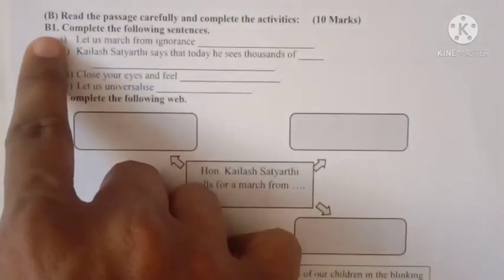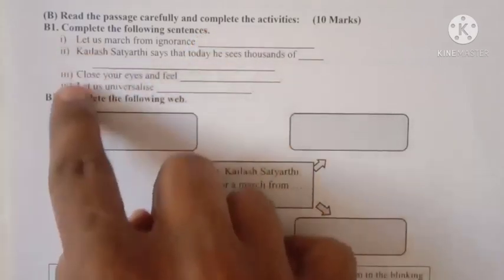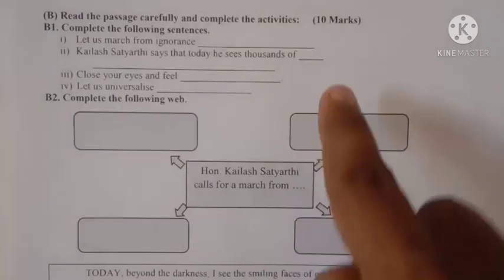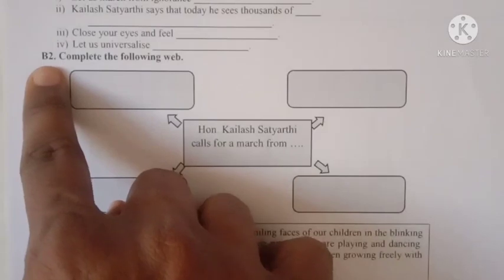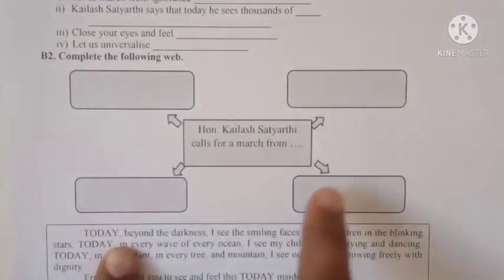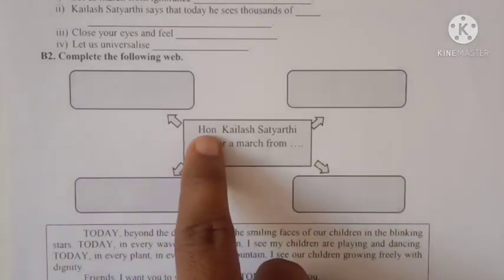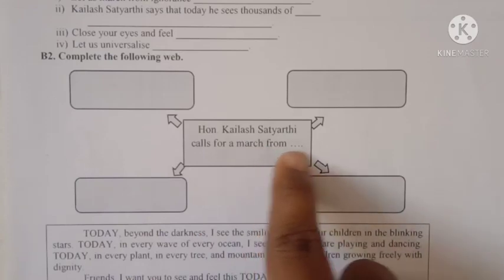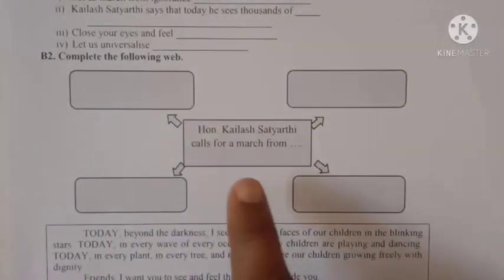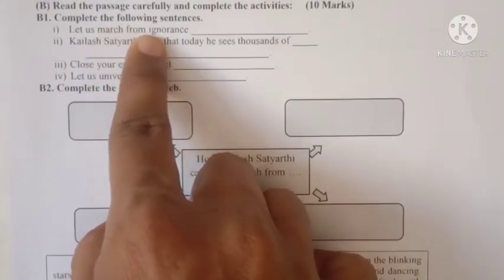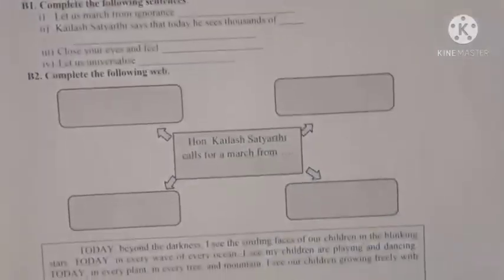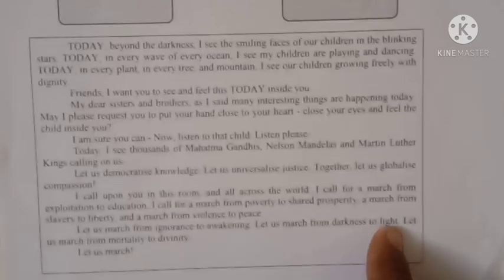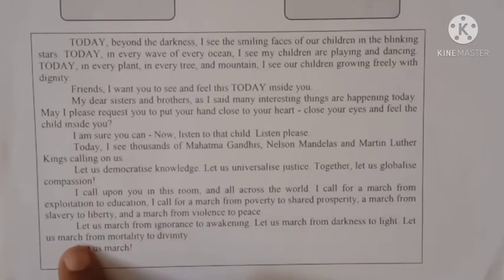Second passage, first activity B1: Complete the following sentences — 4 sentences. The answers are given in the passage, so you can answer this. Activity B2: Complete the web diagram. The title is Honorable Kailash Satyarthi. Complete the sentences from the passage. The answers are: Mars from ignorance to awakening — number one. Mars from darkness to light — number two. Mars from mortality to divinity — number three.